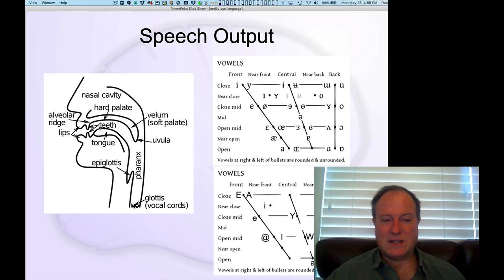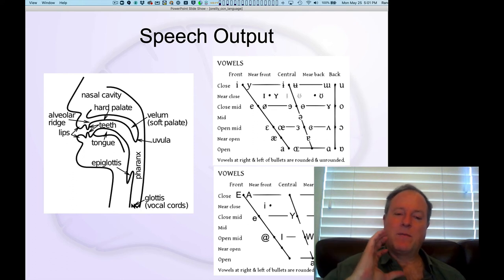Anyway, here's the details about how it works. A primary distinction in speech output is between vowels and consonants. Vowels are things you can sing. They involve an open pathway of sound through the whole articulatory system and they vary in the position of the tongue relative to the front versus back and how open or closed the tongue is.